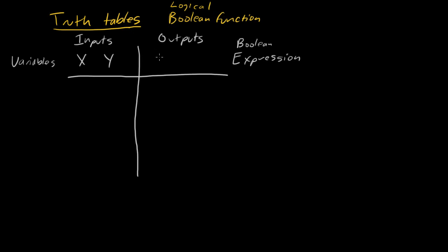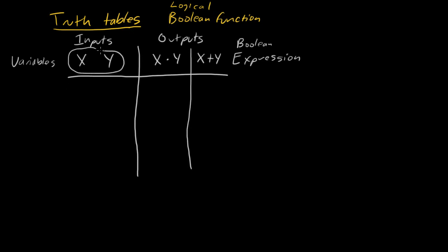There are going to be things like x and y, or x or y. I haven't gone over the notation yet, but just read this as x AND y, and this as x OR y. So here we have two inputs and two separate output columns.